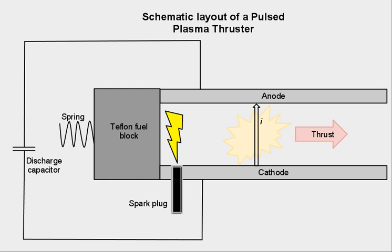A PPT was flown by NASA in November 2000, as a flight experiment on the Earth Observing One spacecraft. The thrusters successfully demonstrated the ability to perform roll control on the spacecraft and also demonstrated that the electromagnetic interference from the pulsed plasma did not affect other spacecraft systems.